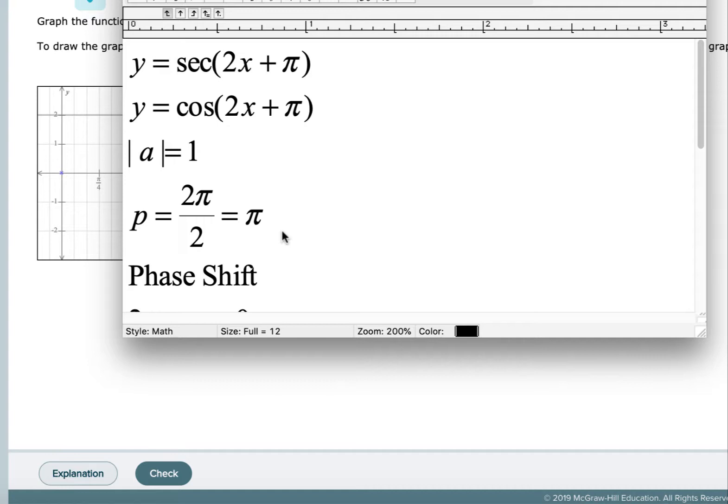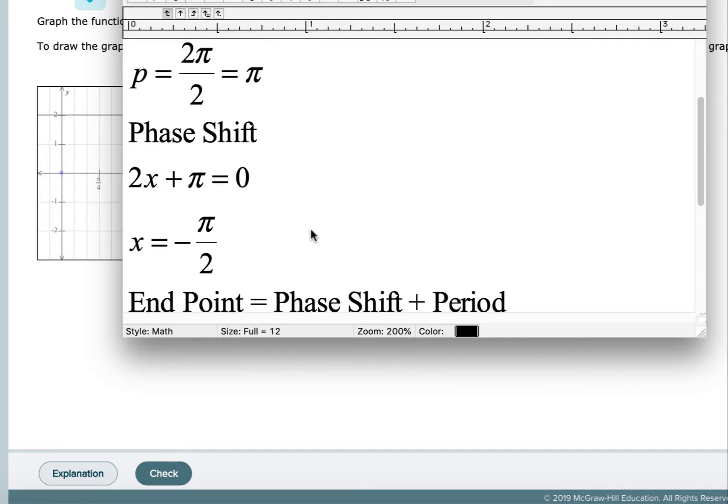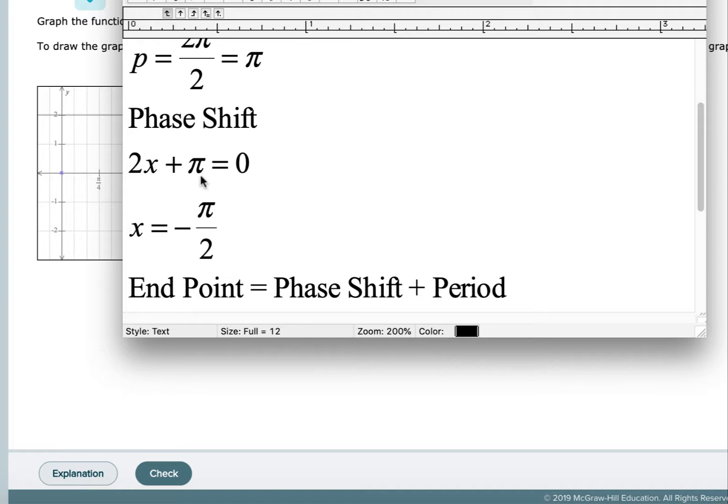Next thing we're going to do is find the phase shift by setting the argument equal to 0. So we're going to let 2x plus π equal 0. And when we let 2x plus π equal to 0, we subtract π from both sides and divide by 2, and we get x equals negative π over 2.